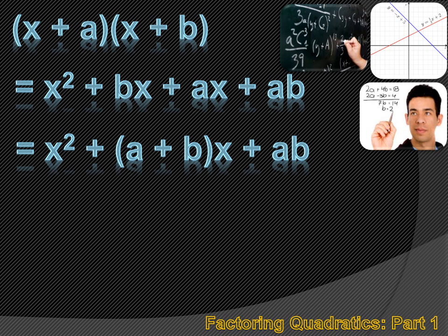I can combine that to x squared plus a plus b times x plus ab. If this step confused you, think about it this way: we're combining bx and ax and getting a plus b times x. If b was 3 and a was 5, combining 3x plus 5x gives 8x, or 3 plus 5 times x. Using generic b and a, I get a plus b times x. So my quadratic product is x squared plus a plus b times x plus ab.